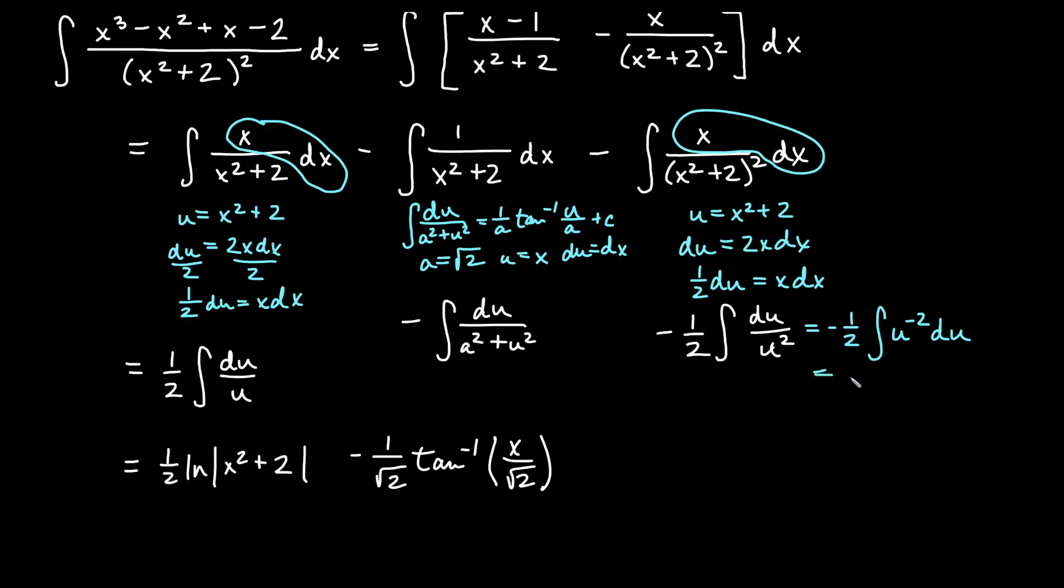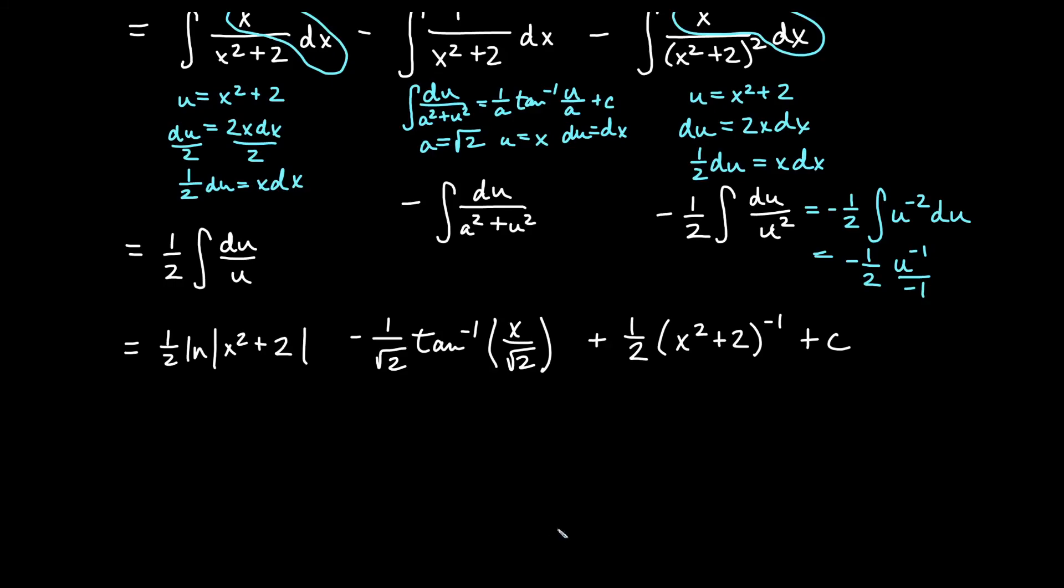So if I think about -1/2, I raise the power by 1—that would be u^(-1)—and then dividing by that new power. Dividing by -1 is going to turn our 1/2 out front positive. So we will have +1/2 u^(-1). If I change that, we would say (x² + 2)^(-1).